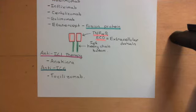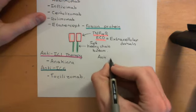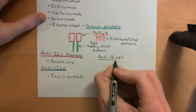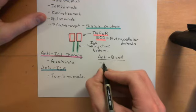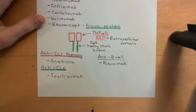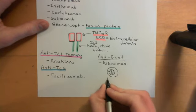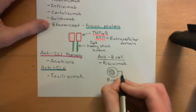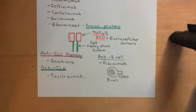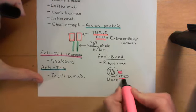Next are biopharmaceuticals that work by producing immunosuppression. The first is an anti-B cell therapy, which works by removing B cells. The drug is a chimeric monoclonal antibody called rituximab, directed against a protein specifically found on the surface of B cells called CD20. CD20 is very specifically found on B cell surfaces — it's not found on other cells, not even plasma cells. When B cells differentiate into plasma cells, they stop expressing CD20.